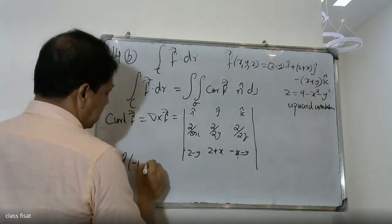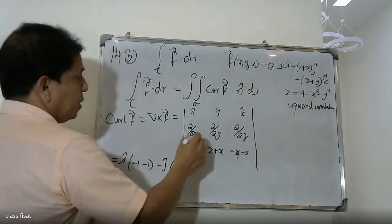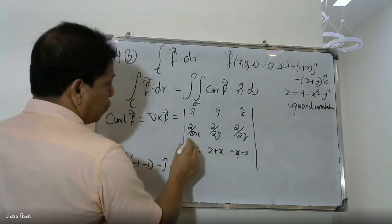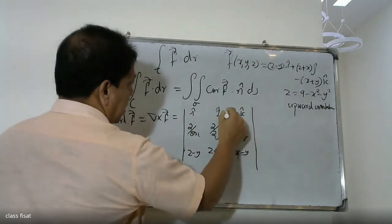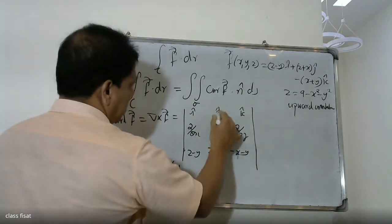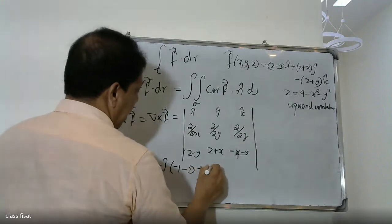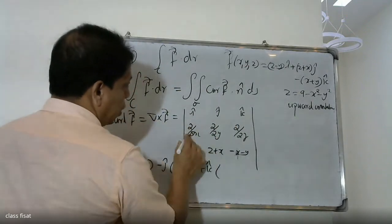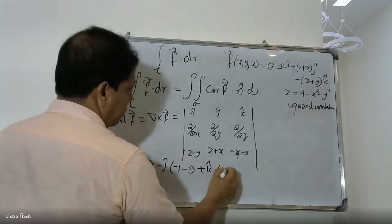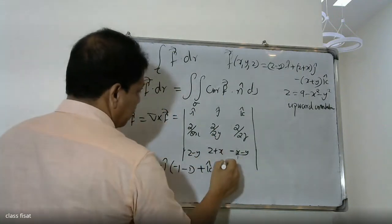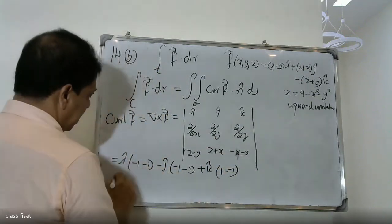d/dz of (x minus 1), minus j into d/dx of (minus 1), then d/dz of (x minus 1), plus k: d/dx of 1 and d/dy of (minus x).